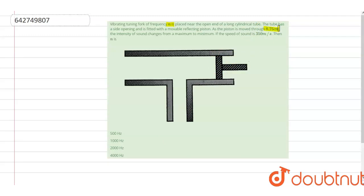The intensity of the sound changes from maximum to minimum. If the speed of sound is 350 meter per second, then N is.